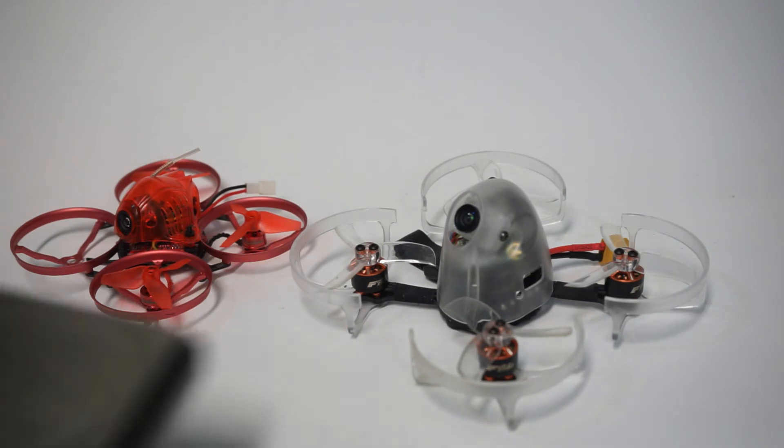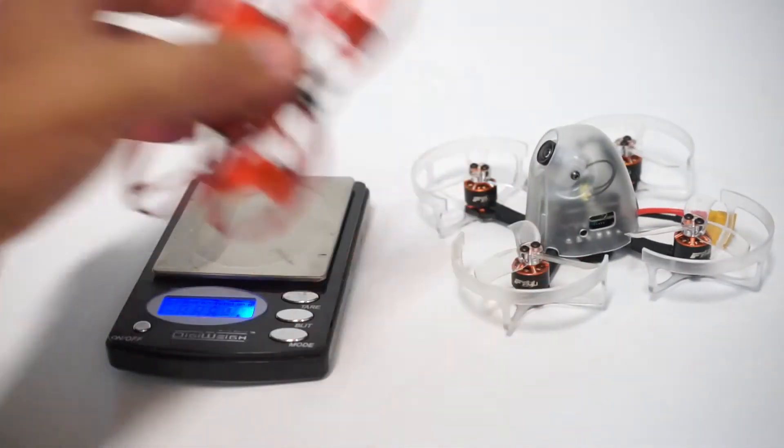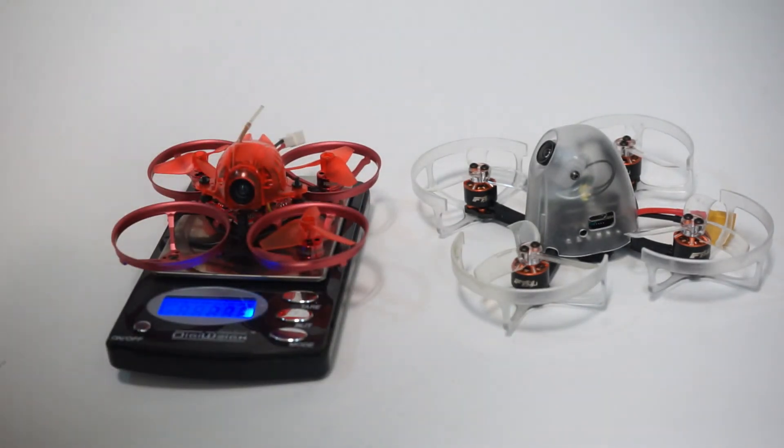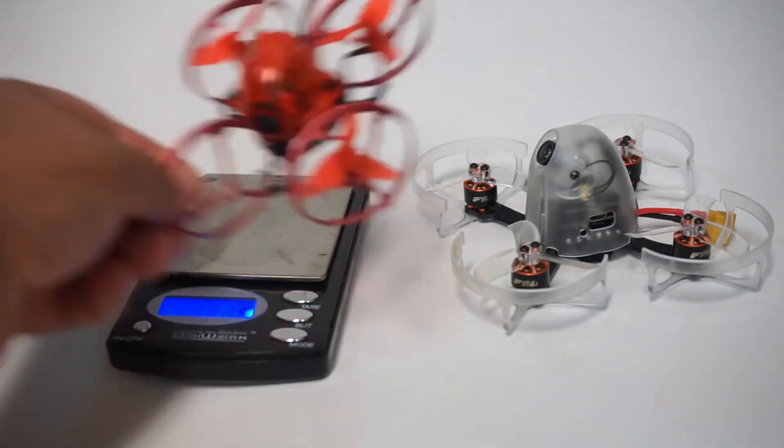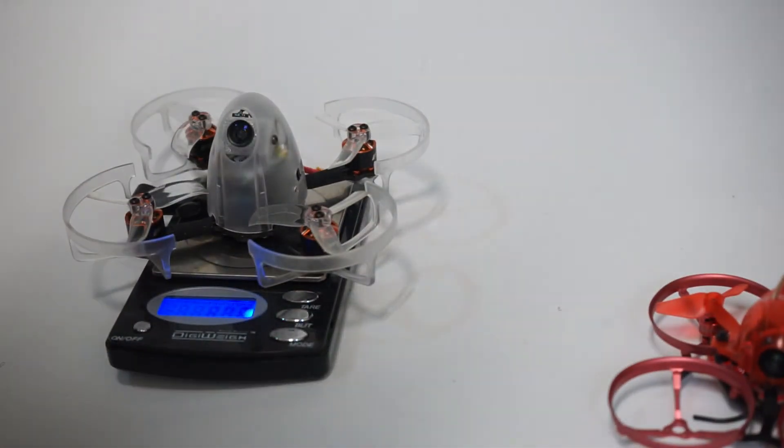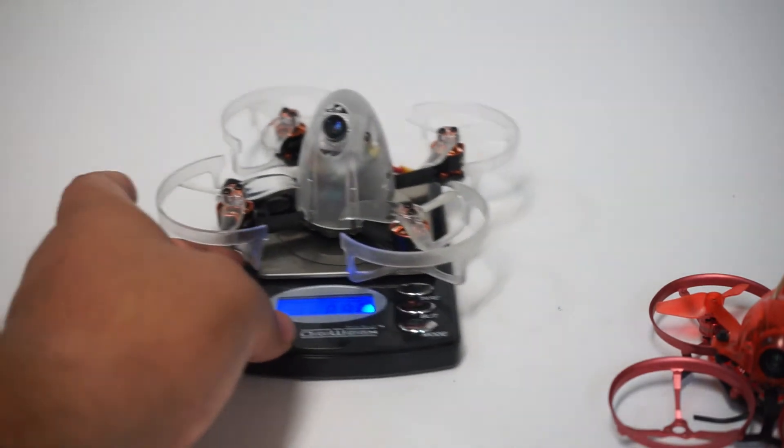If you're curious about weight of these things if you're planning on flying them close proximity or even inside your house. Without battery the Snapper 7 is 27 grams and without battery the F15 is 80 grams. So still somewhat light.